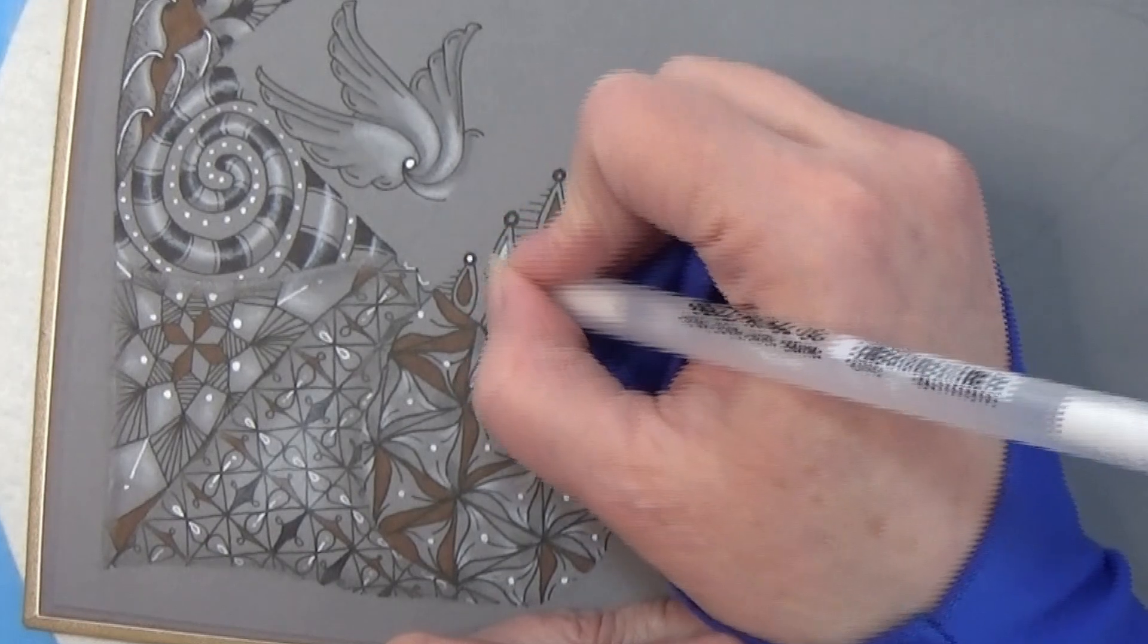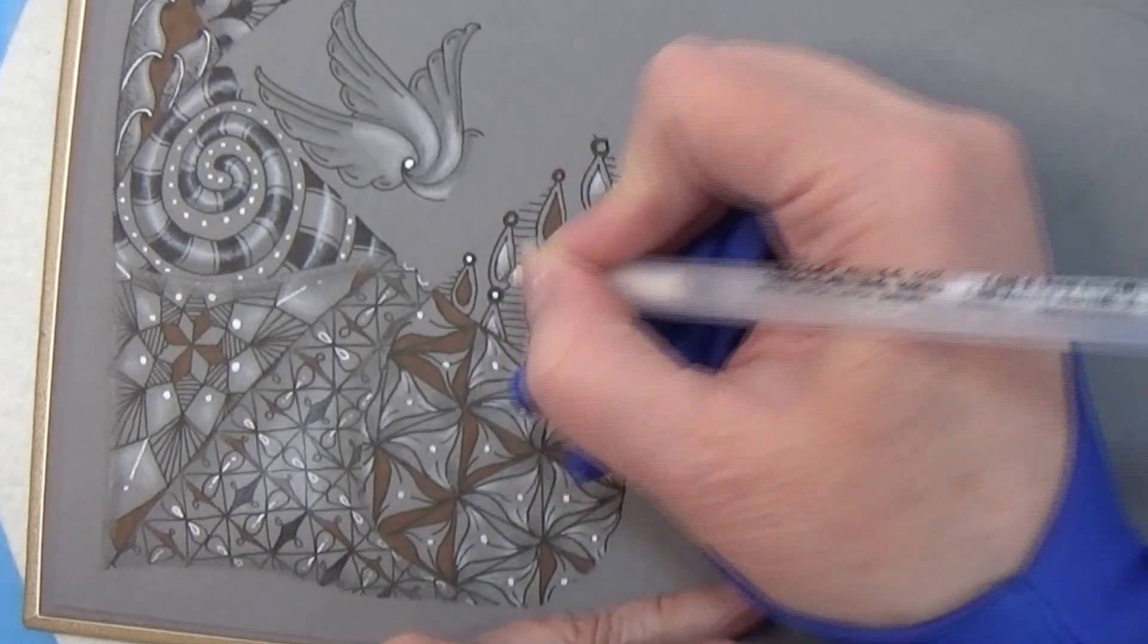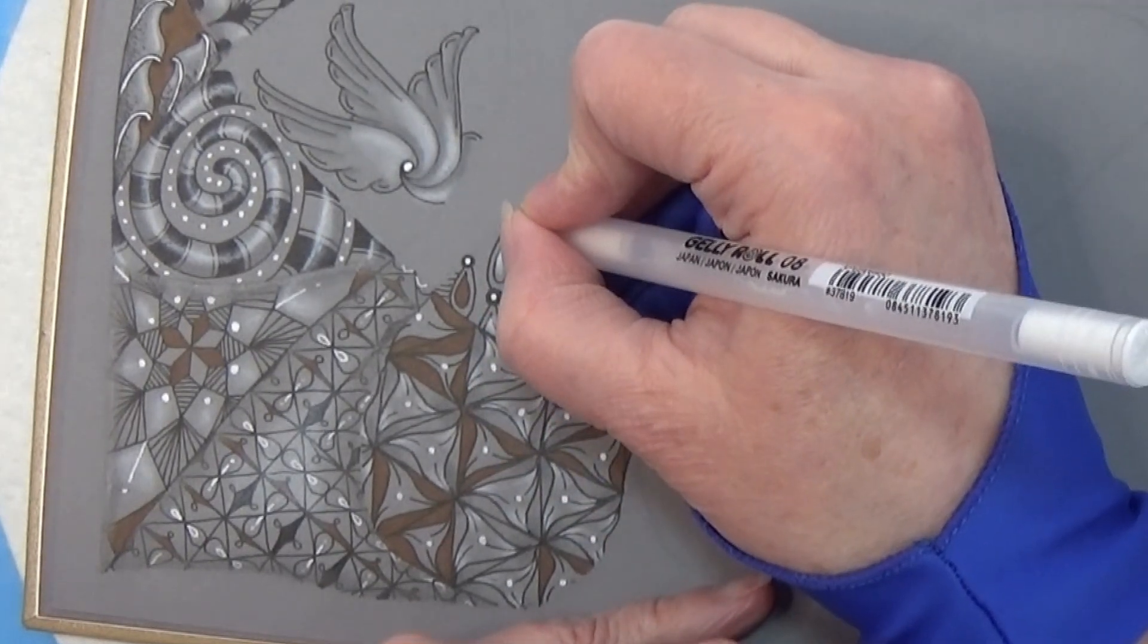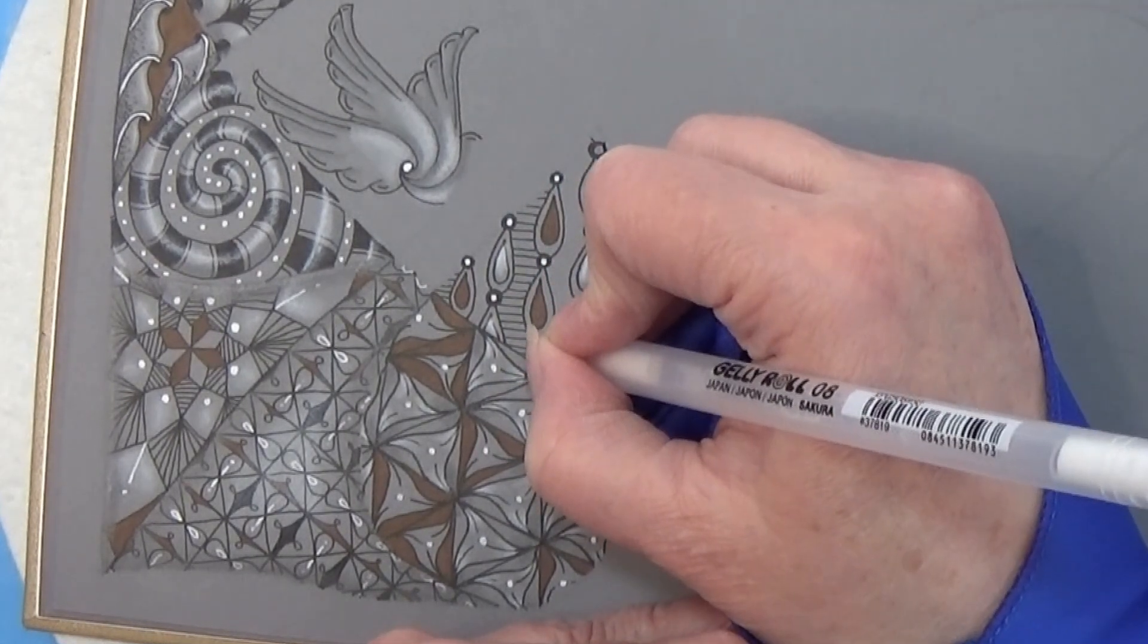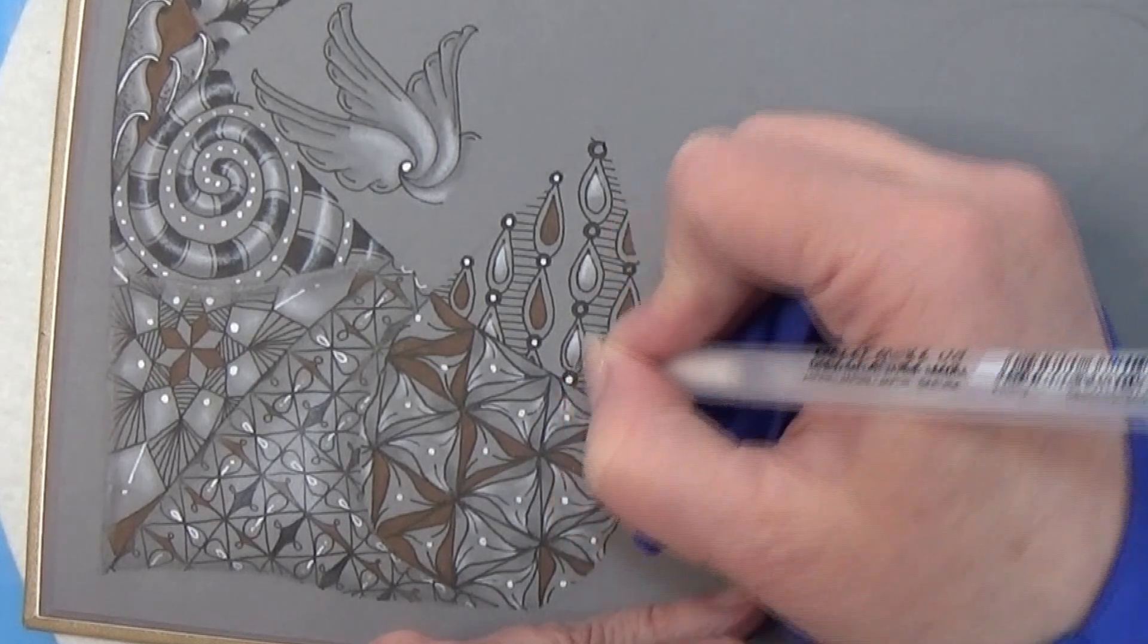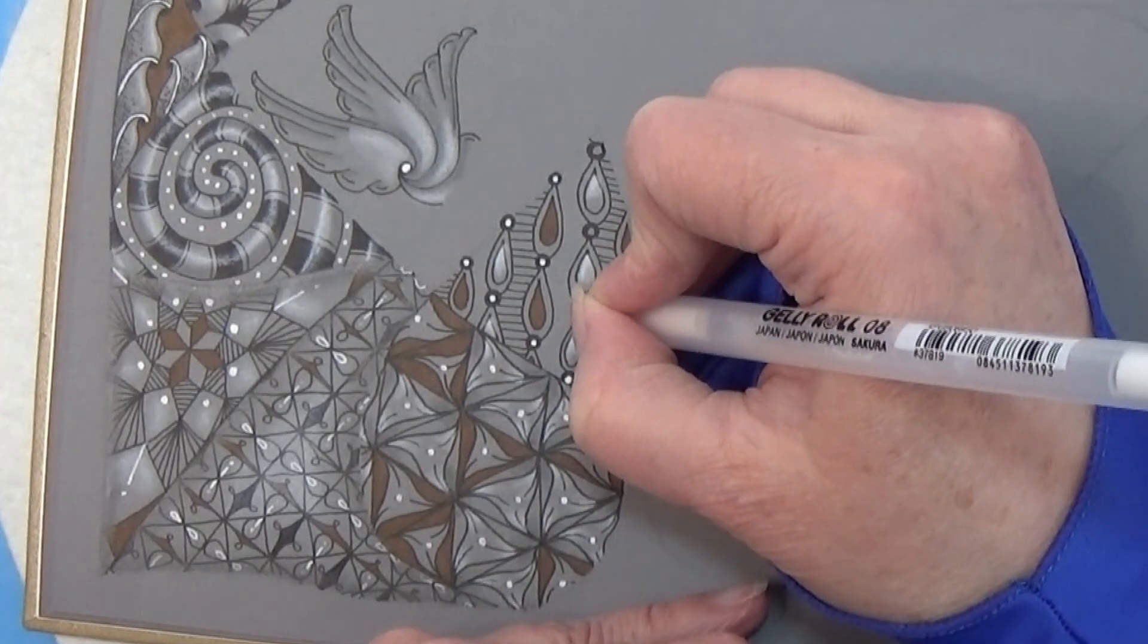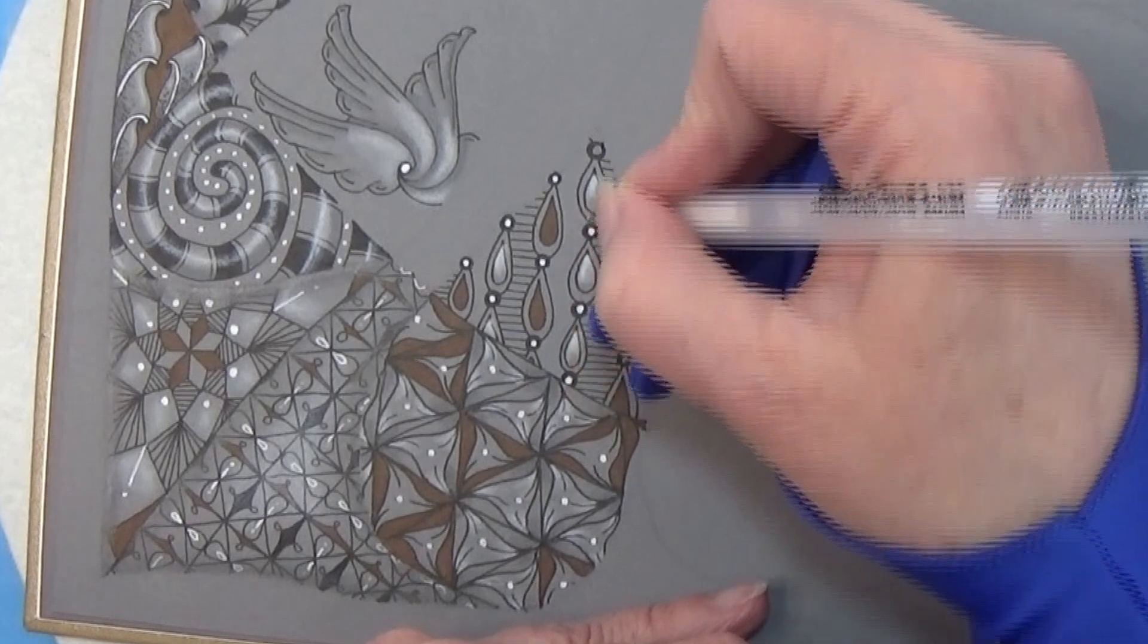And in each of these orbs here, I'm just gonna place a white orb in the middle instead of the gray orb we have right now, just to brighten it up a tiny bit.